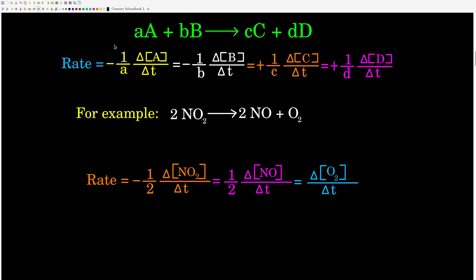The rate is — we can think about it as how fast one of the reactants disappears over time, or how fast one of the products appears over time. Because how fast something disappears relative to something else in a chemical reaction is related to its coefficient, we want to make sure that when we define our rate of reaction, we get the same number no matter what we use — either of the reactants or any of the products.